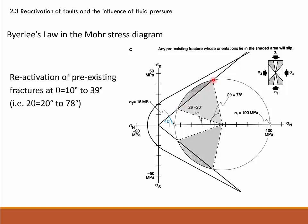However, we see that the Mohr circle overlaps with Byerlee's Law — with the envelope of sliding friction. There are four points defining this overlap, on both the upper and conjugated lower side. The shaded regions between these points represent areas in which fractures can be reactivated. We can express that as two-theta angles: any fault with an orientation of two-theta larger than 20 and smaller than 78 degrees is likely to slide under these stress conditions of sigma_3 = 15 MPa and sigma_1 = 100 MPa.